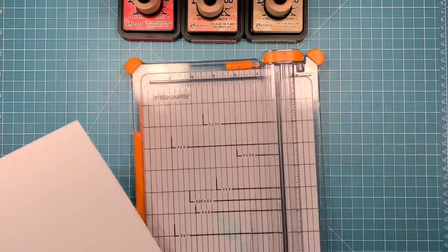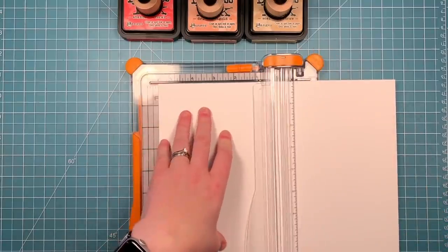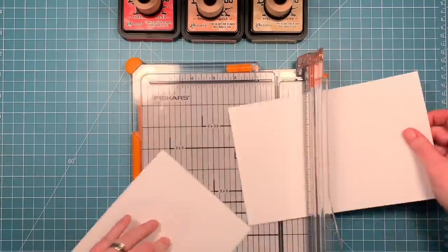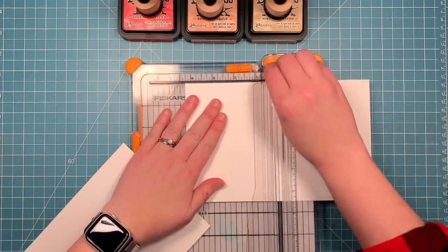I've got some distress inks here and some Neenah solar white cardstock and I'm just going to cut this down into four panels. I'm cutting it at five and a half and then at four and a quarter.